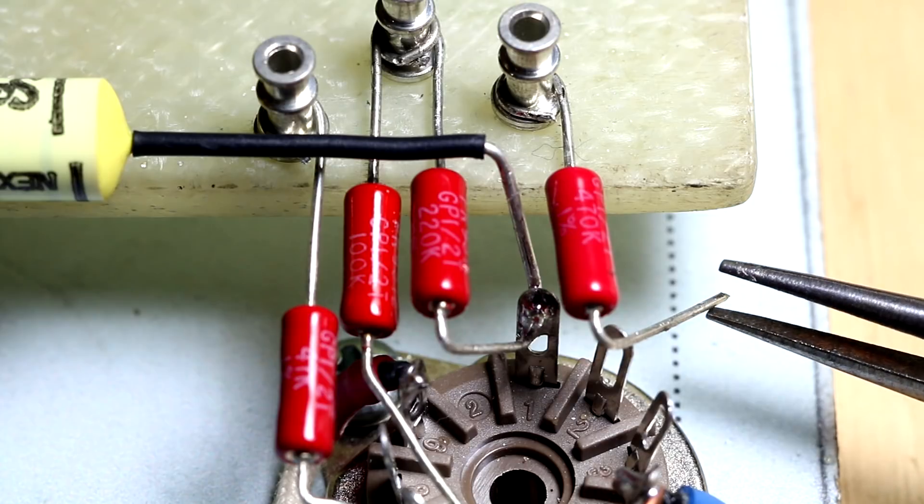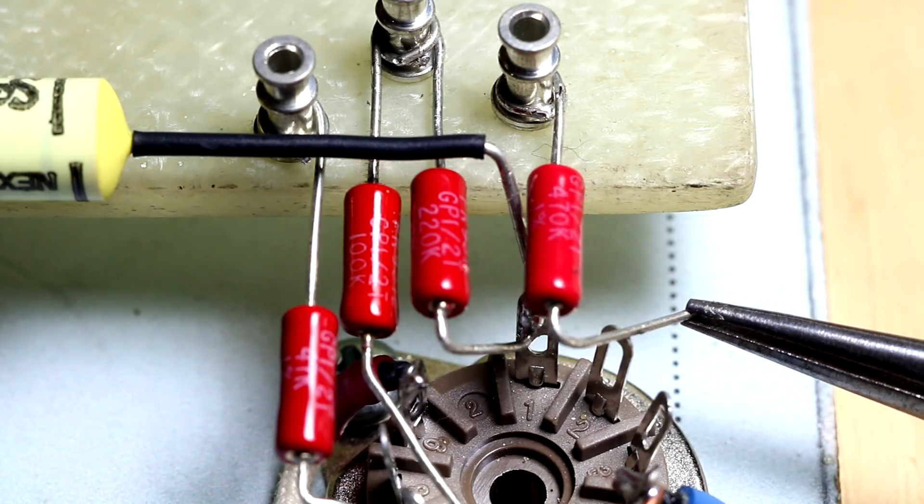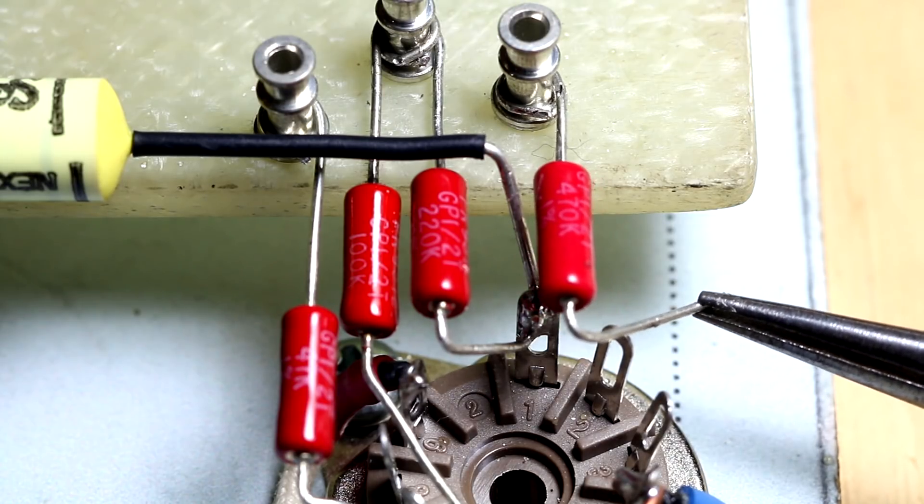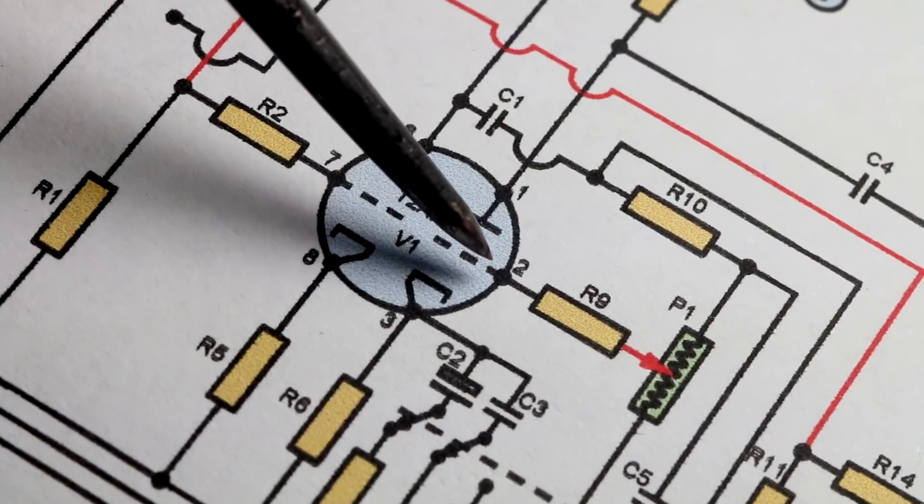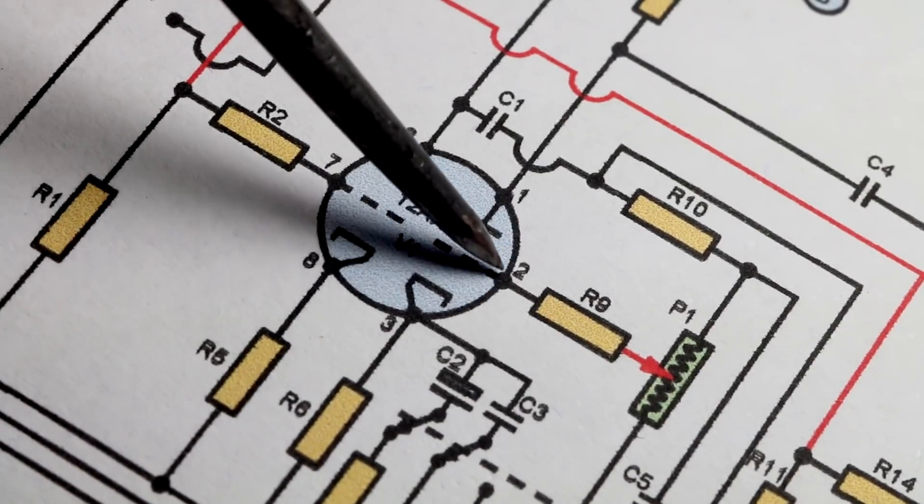I think we'll go ahead and solder this resistor in place to pin number two. If we have a look on the circuit diagram, it's only got the sole resistor connected to it.